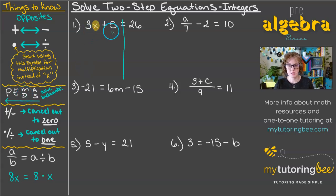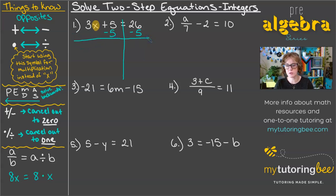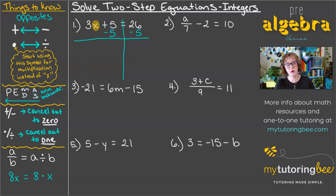We've got this addition of 5, so we're going to undo that by subtracting 5 — we want this to cancel out to 0. Whatever we do to one side of the equation, we have to do to the other side. Sometimes the challenge is not knowing what step to do first, which is why I always refer back to the order of operations and going backwards, since we're undoing all of those operations. So our 5s are going to cancel out, we drop down our 3x, and then 26 minus 5 gives us 21.